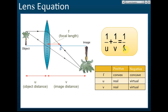How do we know when f is positive or negative? This table gives you the guide. For a convex lens, f is positive. For a concave lens, f is negative. So to summarize: f is positive for a convex lens and f is negative for a concave lens.